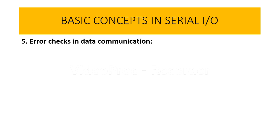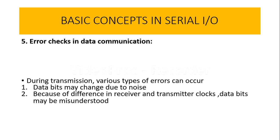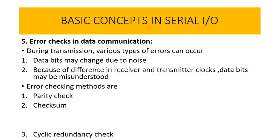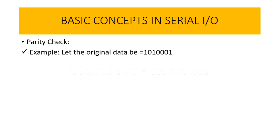The receiver checks the received data against the error checking information, and if there is a mismatch — that means if an error is detected — then the receiver can request retransmission of the data. If we talk about the different types of error checking methods, we have parity check, checksum, and cyclic redundancy check. Let us see how exactly these error checking methods work, starting with the parity check.